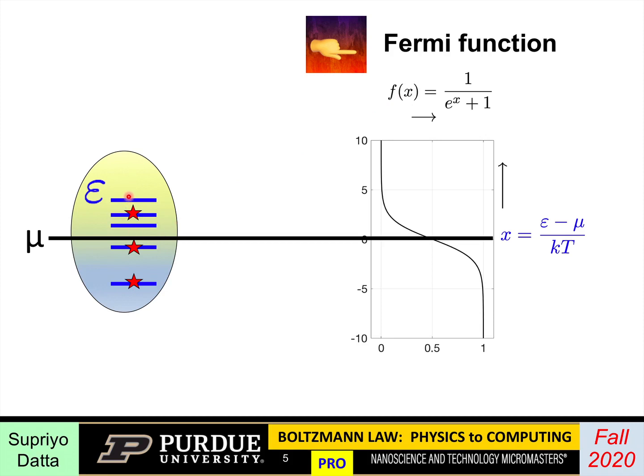If you're way up here in energy, much higher than the electrochemical potential, then x is a big positive number, and then this Fermi function is close to 0. But if you're down here, so that x is a big negative number, then the Fermi function is close to 1. Remember, the Fermi function is like the probability that the state is occupied, because finally, a state is either occupied or unoccupied. You cannot have half an electron. What you can have is zero electrons for half the time and one electron for another half. That's how you should think of this Fermi function.